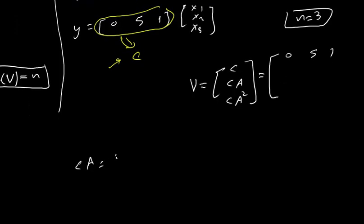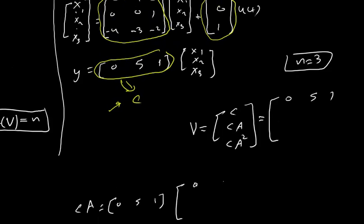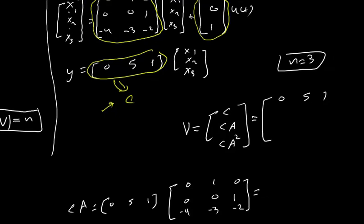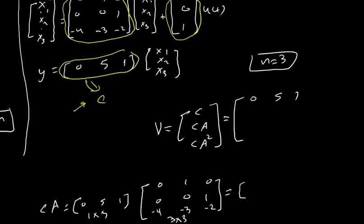We compute C times A: [0 5 1] times [0 1 0; 0 0 1; −4 −3 −2]. This is a 1×3 times 3×3 multiplication, giving a 1×3 row vector: [−4, −3+0, 5−2] = [−4, 0−3, 3]. So CA = [−4, 0−3, 3].